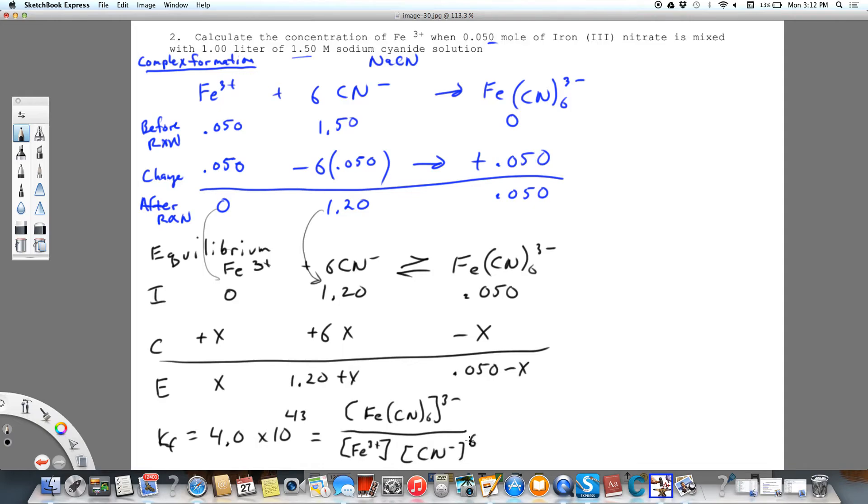And that's to the sixth power. So let's make that red so we don't forget to do that. And now we're going to plug in our numbers and solve for X. Again, our complex is 0.50 minus X. And then we have X for Fe times 1.20 plus 6X. And that quantity is squared.